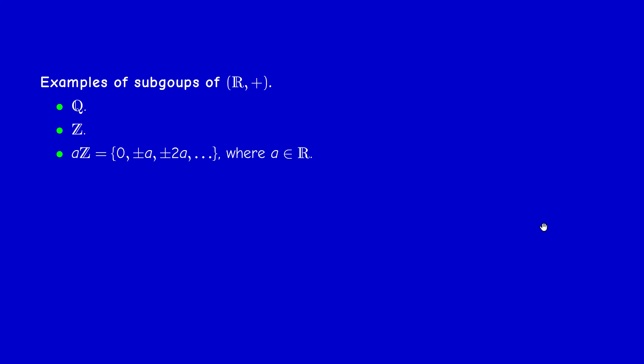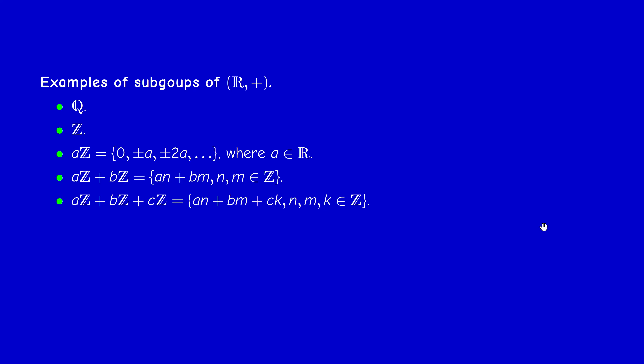The sum of two elements of aZ is in aZ, and the opposite of an element in aZ is in aZ. We can combine subgroups — the sum of two subgroups is also a subgroup. So we can take aZ + bZ, or aZ + bZ + cZ. All these are subgroups of R+.